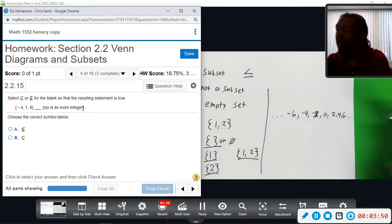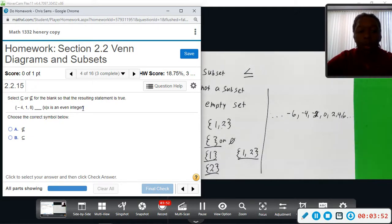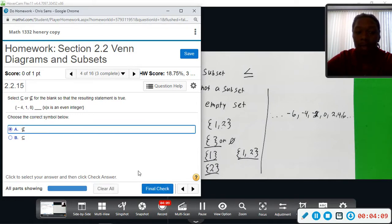And looking at what I've wrote down and comparing that to this set here, this set only contains negative four, one, and eight. The fact that it contains one really throws the definition away because one is not an even number. So this set here on the left is not a subset of this set here on the right.